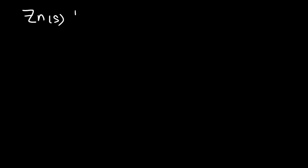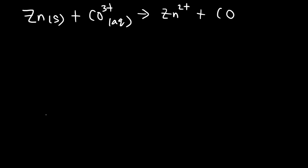Here is another example: zinc metal reacts with cobalt in the +3 state, producing zinc²⁺ and cobalt²⁺. Write the line notation for this reaction. Note that this reaction is not balanced, but we don't need to balance it in order to write the correct cell notation.